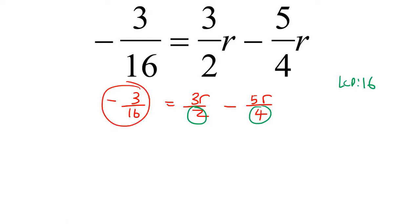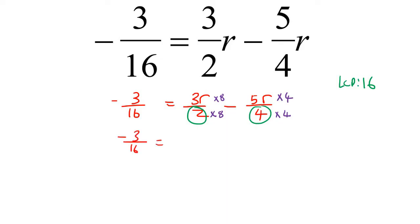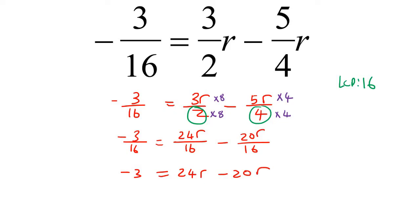So we don't need to change the term over 16. This one multiplies by 8 at top and bottom. This one multiplies by 4, doing the same at the top. We end up with negative 3 over 16, equals 24R over 16, minus 20R over 16. When the denominators are the same, we get rid of them: negative 3 equals 24R minus 20R, which simplifies to 4R.